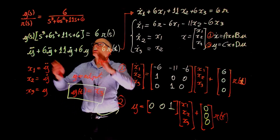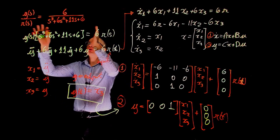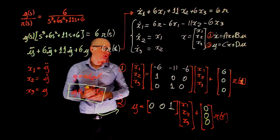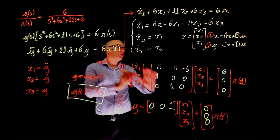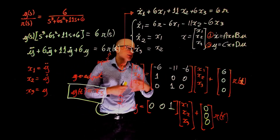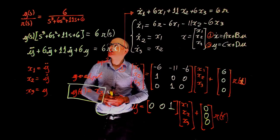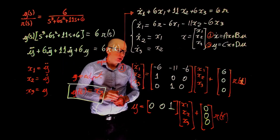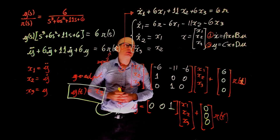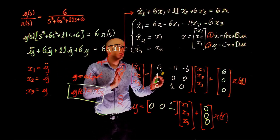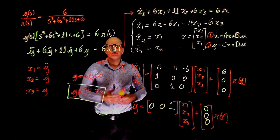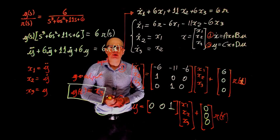And this is it. We went from a transfer function in the Laplace domain back to the temporal domain, and we are now able to find a state-space representation of this transfer function. Notice that this third-order transfer function is now represented as a set of three first-order differential equations.